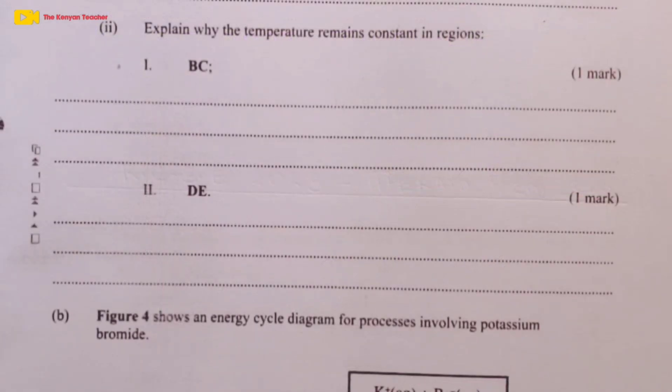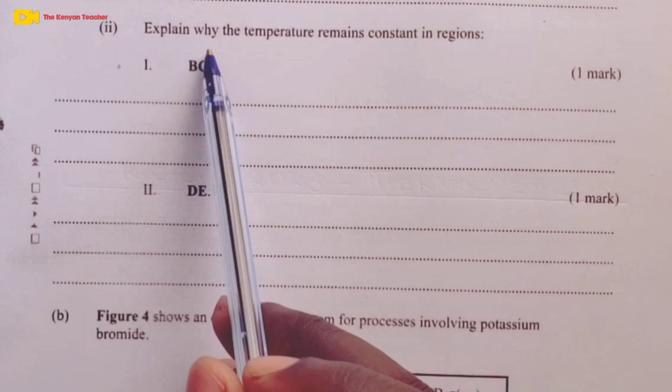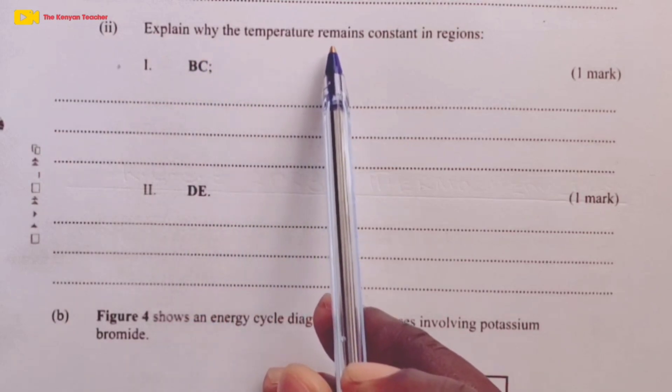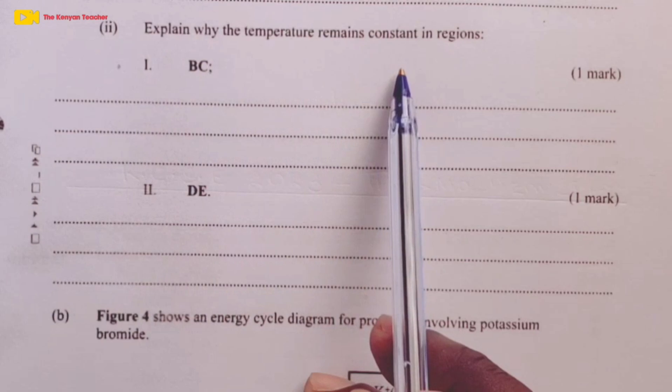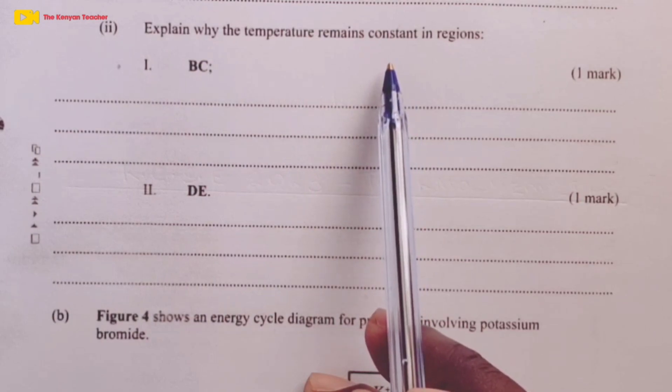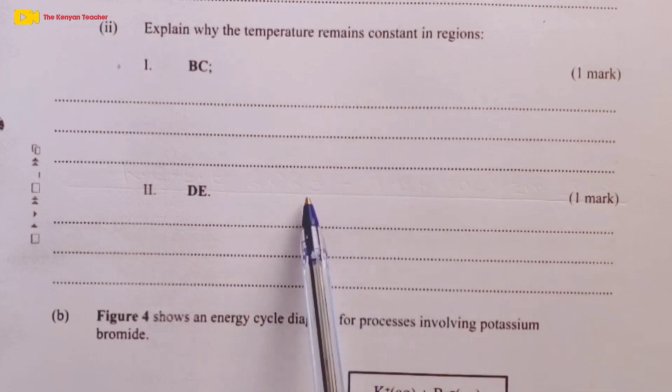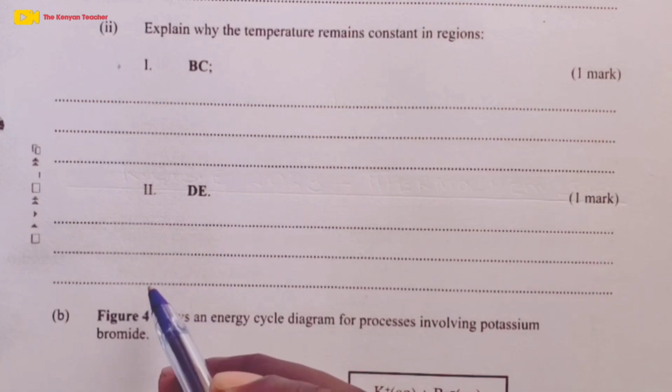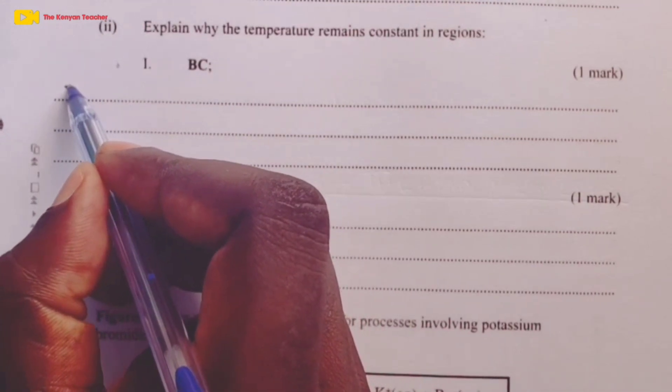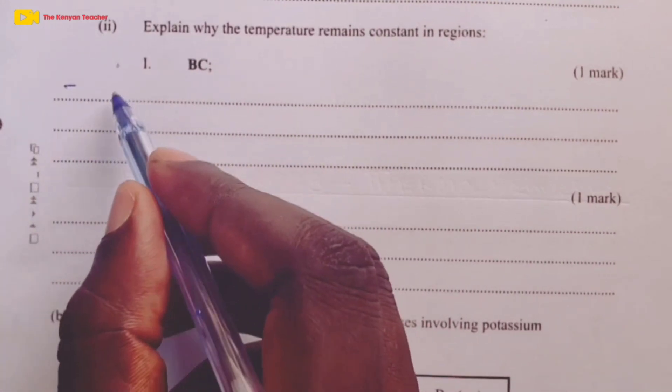In Roman 2 of part A, we were asked to explain why temperature remains constant. Temperature remained constant between region BC and DE. So the examiner asked us to give reasons as to why that is so. We begin with region BC.